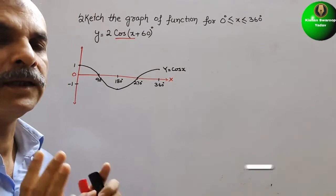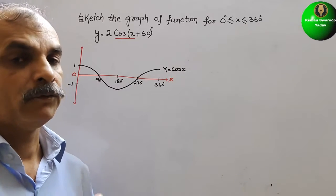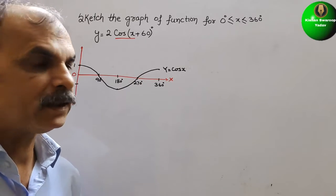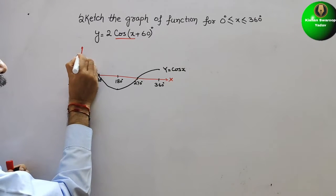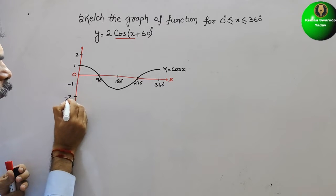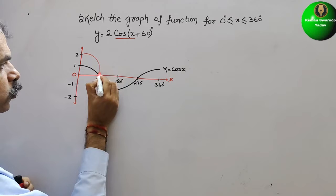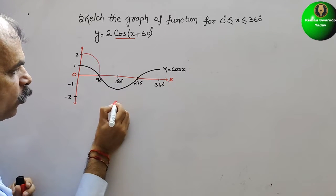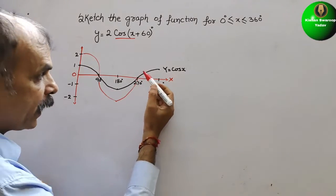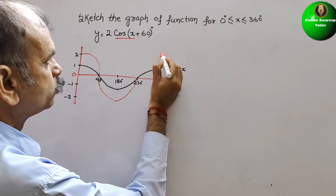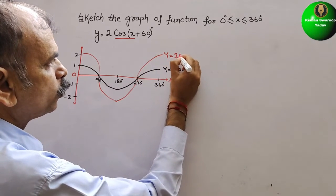Now they have given 2cos x, which means an amplitude of 2. We will increase the amplitude by 2. So 1 × 2 = 2, meaning the new amplitude is 2 and minus 2. The same shape of graph but stretched: it starts at 2, goes to 0, goes down to minus 2, back to 0, then back up to 2. This graph is y = 2cos x.